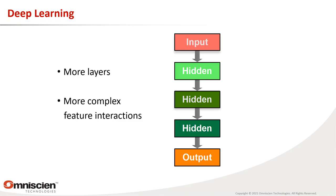Deep learning is really just neural learning as we have known it since the 1960s and especially 1980s, but now with more layers. The 'deep' comes from having deeper structures with more processing between layers, allowing more complex feature interactions — similar to how a program with hundreds of lines of code can do so much more than one with only three lines.